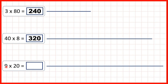And finally, we have 9 times 20. If we ignore the zero for a moment, we know that 9 times 2 is 18. So we can write 18, but then put a zero on the end, because if we have an end zero in a multiplication question, there will be an end zero in our answer as well.